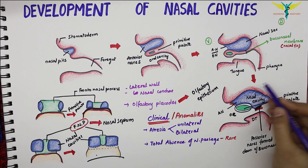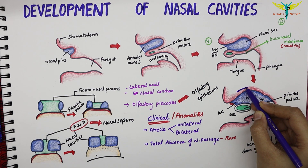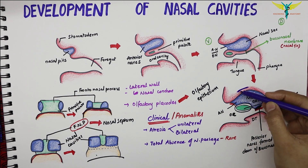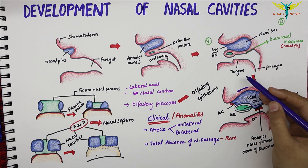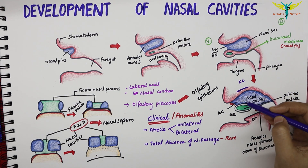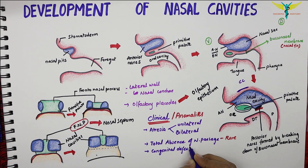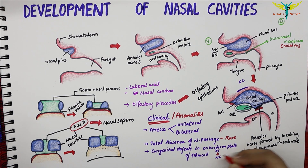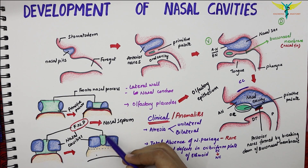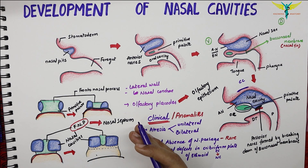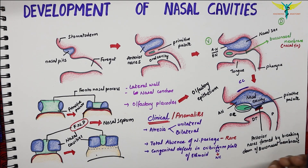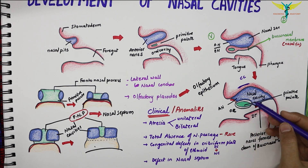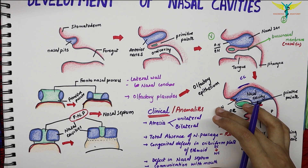Congenital defects in the cribriform plate of the ethmoid bone may lead to a communication between the cranial cavity and the nasal cavity. The nasal septum may not be in the midline — it may be deflected to one side — or the septum may be absent. Sometimes the nasal cavity may communicate with the mouth. These are the main clinical anomalies.